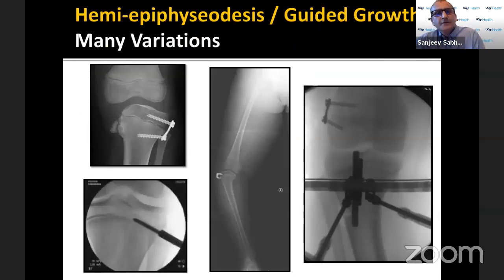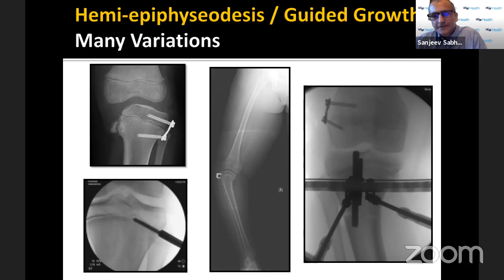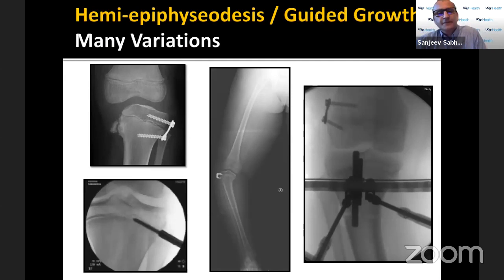For surgical options, we have two big groups: growth modulation with implants or drilling, and osteotomies either in the tibia or with or without the femur. There is also the option of a plateau elevation of the medial side in a select group of patients.